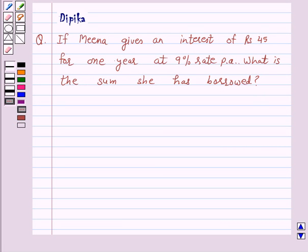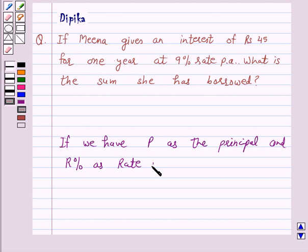Now, we know that if we take P as the principal or the sum borrowed and R percent as rate percent per annum, then the interest